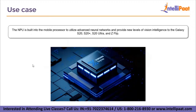The NPU is built into the mobile processor to utilize advanced neural networks and provide new levels of vision intelligence to the Galaxy S20, S20 Plus, S23 Ultra, and the Z Flip. The Neural Processing Unit powers Scene Optimizer, offering enhanced ability to recognize what's in your photo and prompt the camera to adjust to ideal settings for the subject. It also gives the front camera the ability to blur the background of selfies and create bokeh effects. Additionally, the NPU helps the on-device AI integrated in Samsung phones, called Bixby Vision. Bixby Vision's lens mode detects what you are seeing, providing information on a restaurant you just passed or a pair of shoes you want to buy.